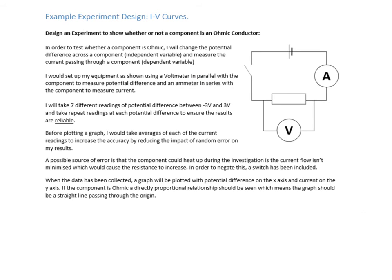To make it a valid experiment, we're going to take seven different independent variable readings — fewer than that and you don't have enough evidence. We'll do it between minus three volts and three volts, so we have both positive and negative readings, allowing us to distinguish between a diode and an ohmic conductor. We're taking repeat readings to ensure results are reliable, then taking averages of the current readings to improve accuracy by removing random error. We're also addressing the source of error from temperature affecting resistance, and explaining we've included a switch to negate that effect.